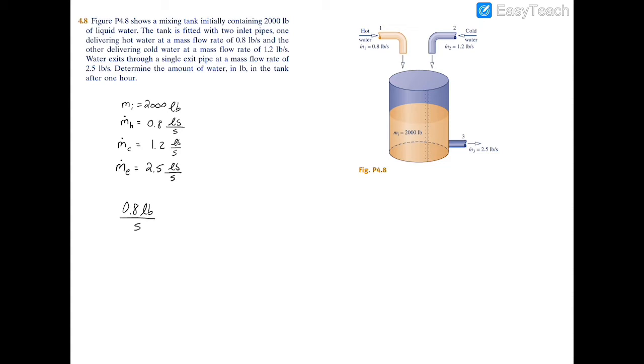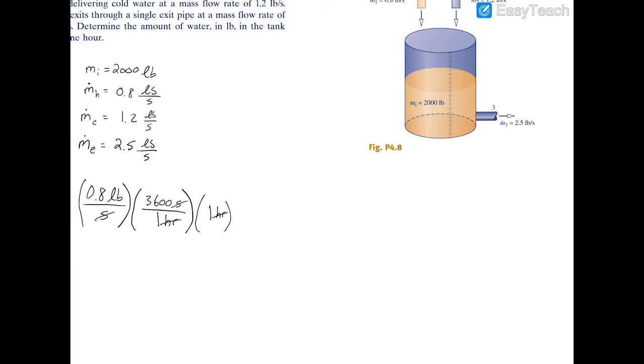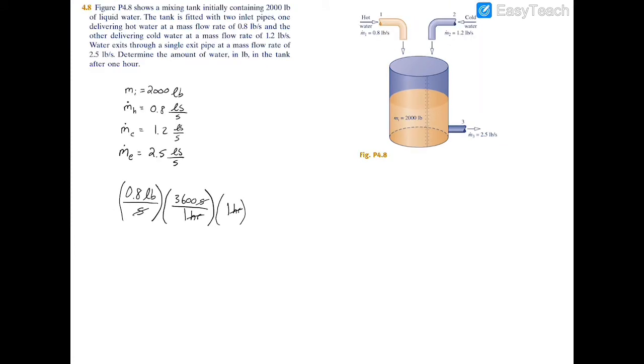Pounds on the top, seconds on the bottom. And we're going to convert this into pounds. So after one hour, one hour is 3600 seconds per hour. And then we're told that after one hour we have to find the amount of water, so we just multiply that by one hour. Let's go through here, so you have the hours canceling out, you have the seconds canceling out, you're left with pounds. And if you do the math out, you'll have 2880 pounds of water and that's going to be entering the tank.